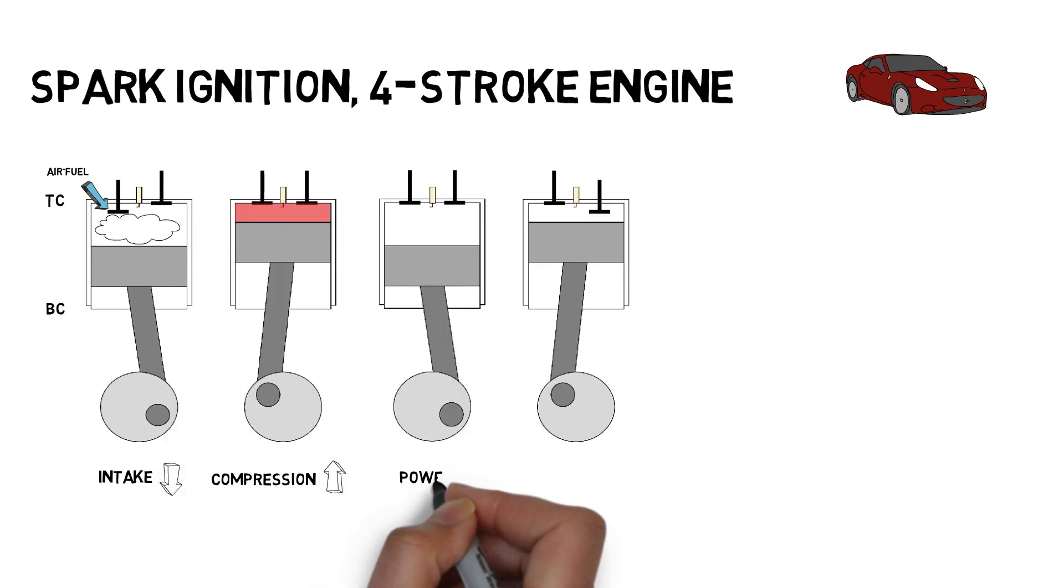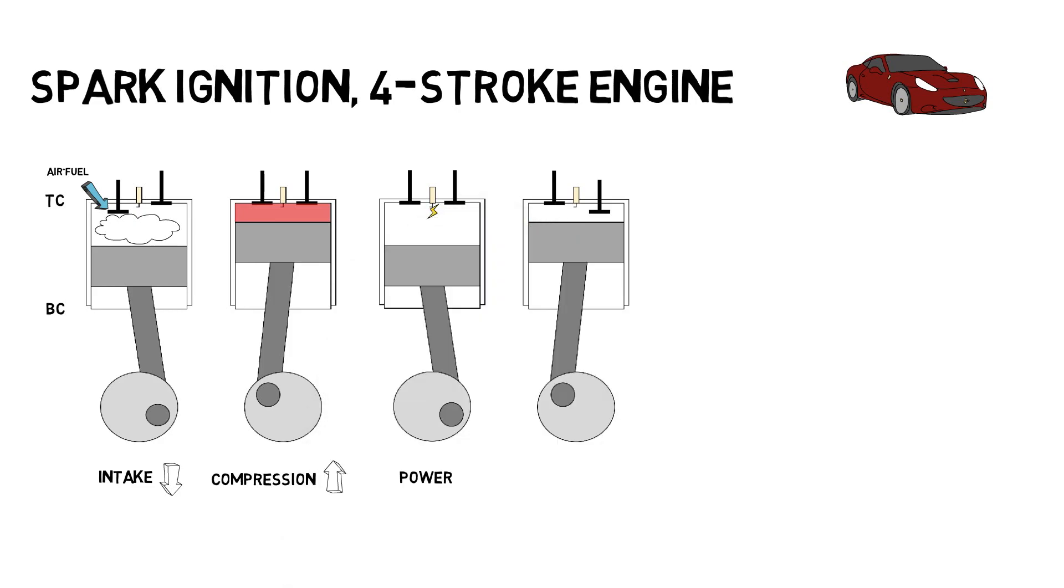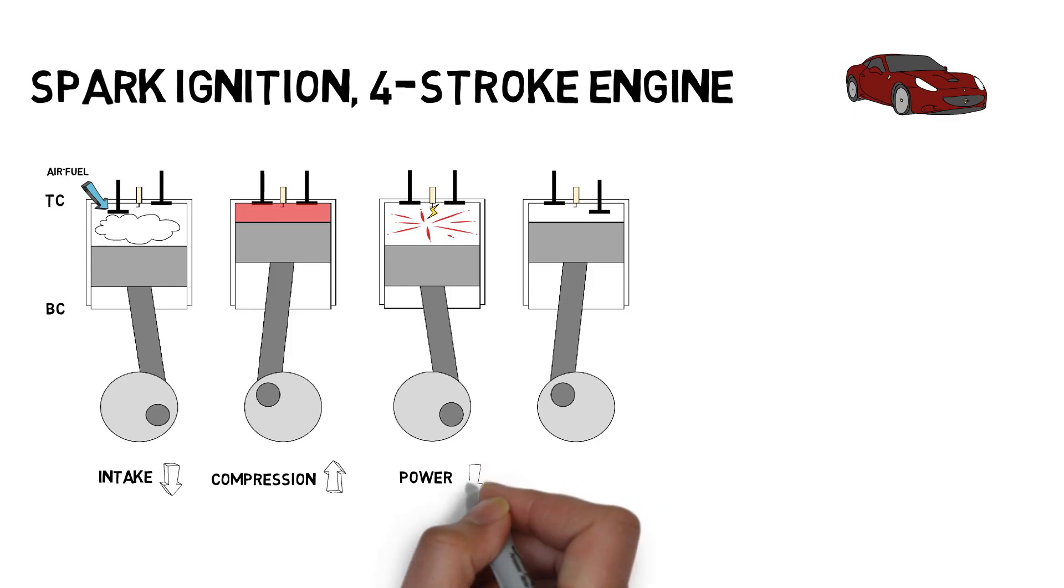In the power stroke, when the piston approaches top center, a spark plug produces an electric arc starting the ignition process. The expanding explosion then pushes the piston down.